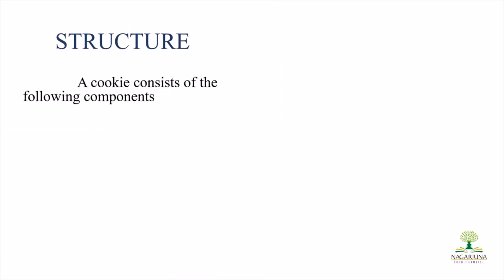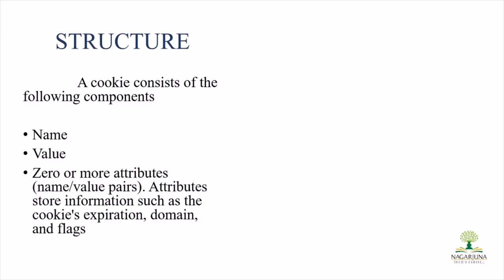Regarding cookie structure: a cookie consists of three components - the name, its values (zero or more attributes), for example domain, flags, etc. Each cookie is effectively a small lookup table containing key-value data pairs, for example first name and last name. Once the cookie has been read by the code on the server or client computer, the data can be retrieved and used to customize the web page appropriately.